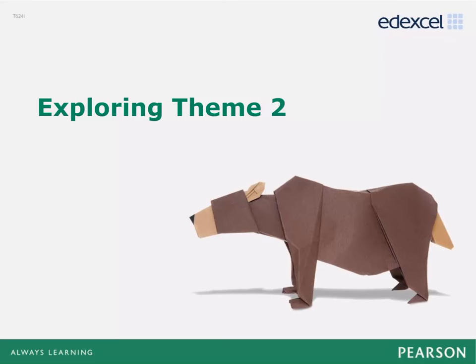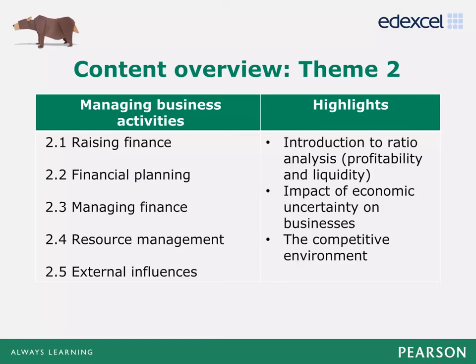We're now going to summarise the highlights in Theme 2. You might want to refer to the specification section or have your hard copy to hand as we go through this section. You can also refer to the Getting Started Guide, which includes teaching and learning ideas for each topic. Theme 2 explores the finance and operations functions and investigates external influences on business. Students must cover a range of different types and sizes of business in various sectors and environments, and consider local, national and global contexts.